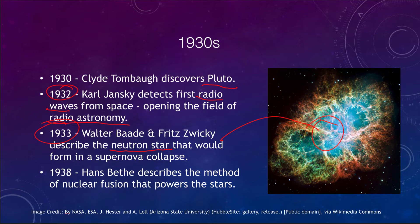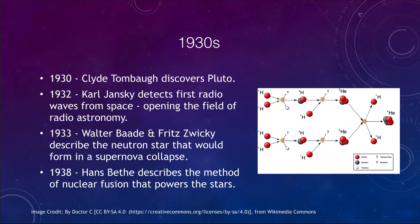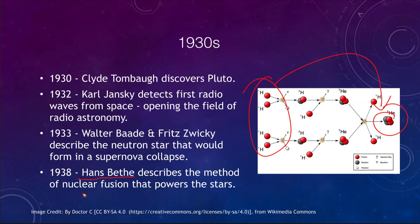Towards the end of the 1930s, we learned how stars produce their energy. Hans Bethe gave us the method of nuclear fusion we use today, where essentially four hydrogen atoms go through a process and become a helium atom. That is the nuclear fusion that powers the stars. Prior to 1938, we were still working to understand how the stars could be powered.